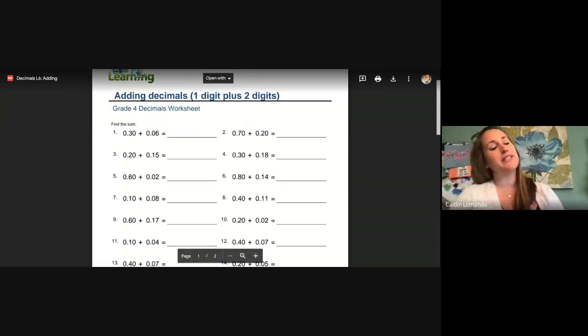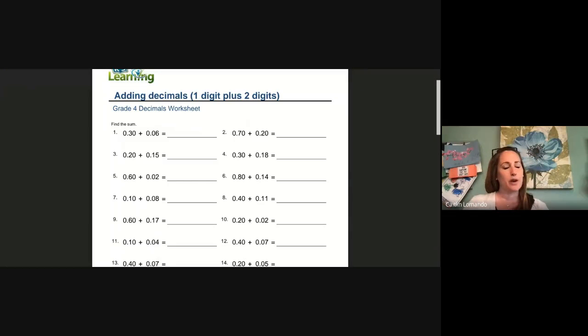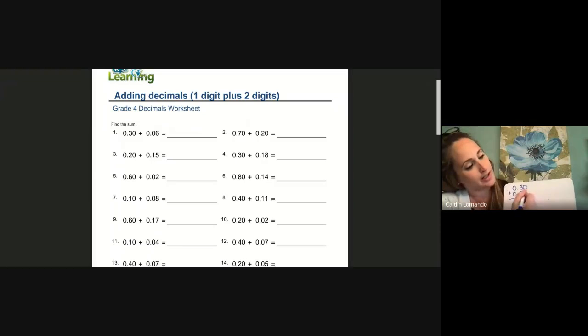Whenever we see it written horizontally across, we always want to write it vertically up and down. So, if our first one says 30 hundredths plus six-tenths, super easy. We always start in the hundredths place. So, all the way to the right, six plus zero is six. Three plus zero is three. Must put that decimal point. That's it.